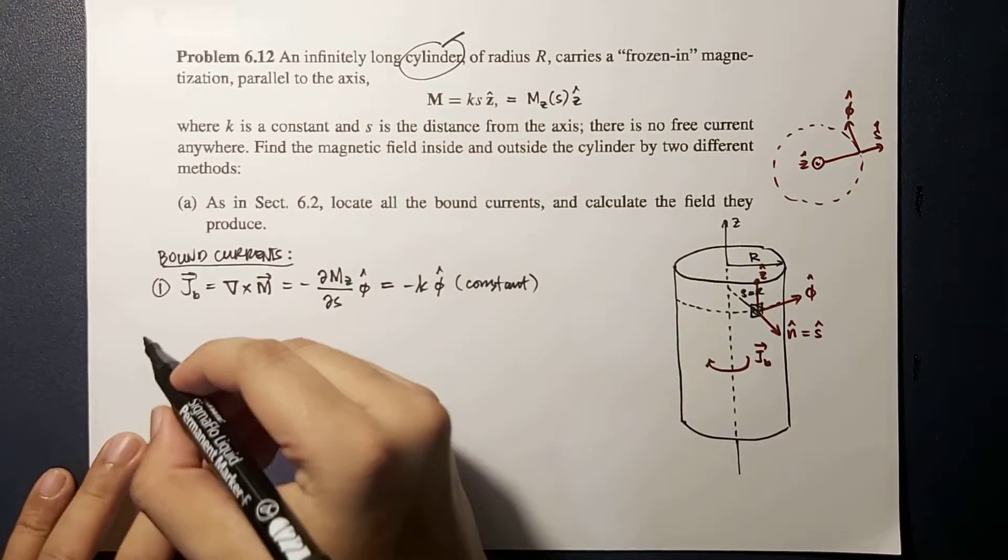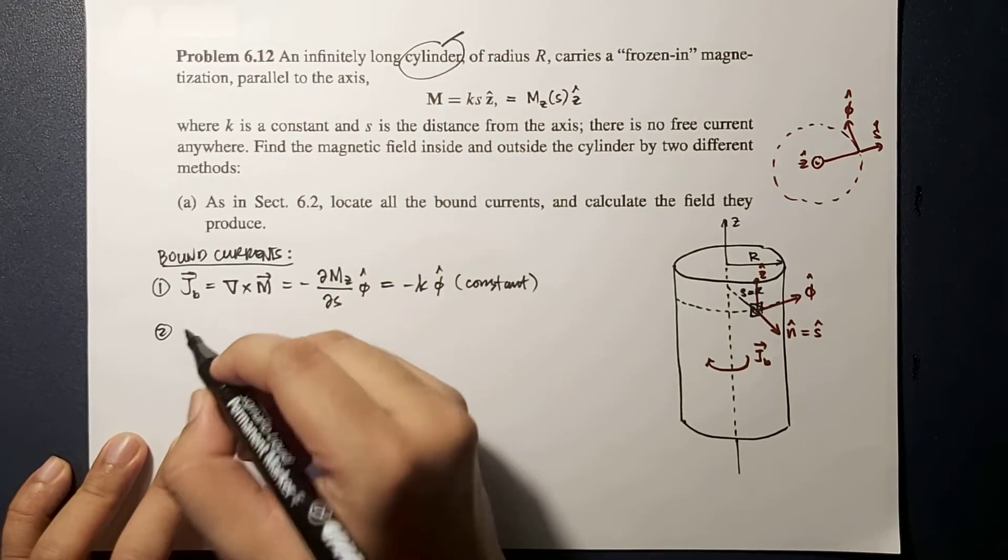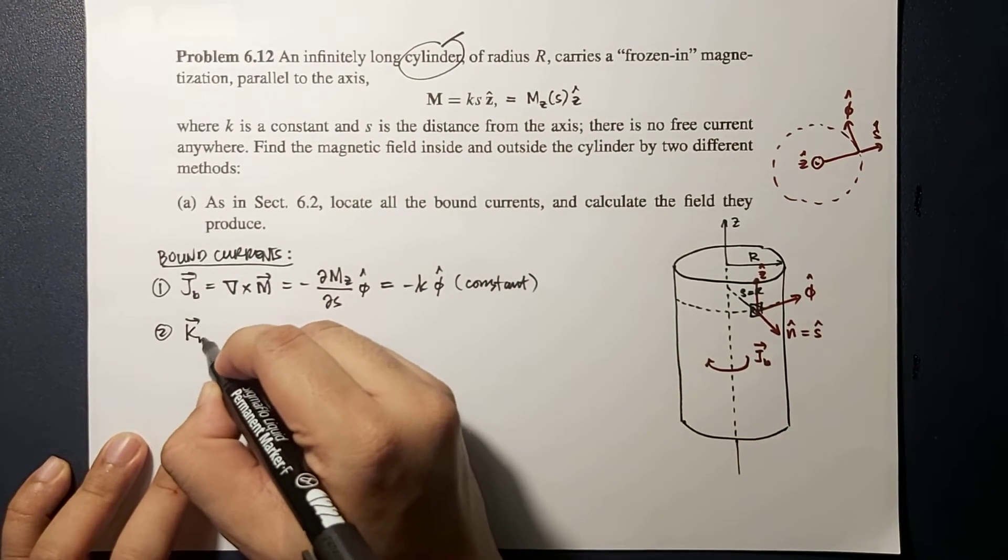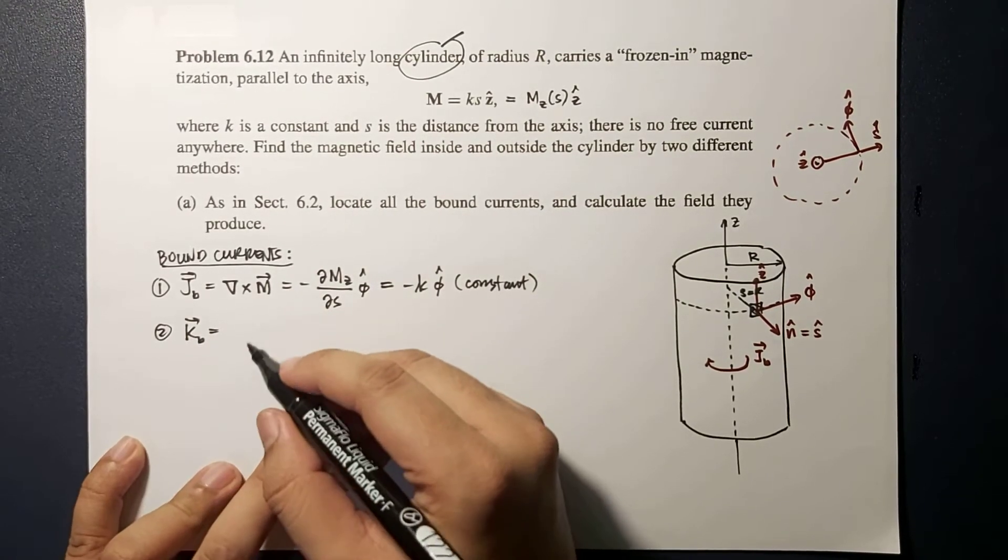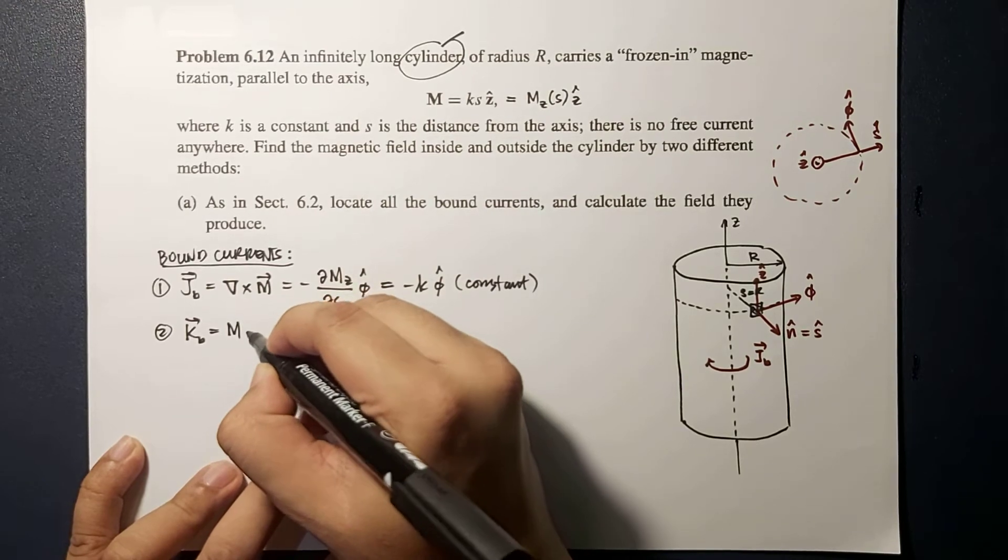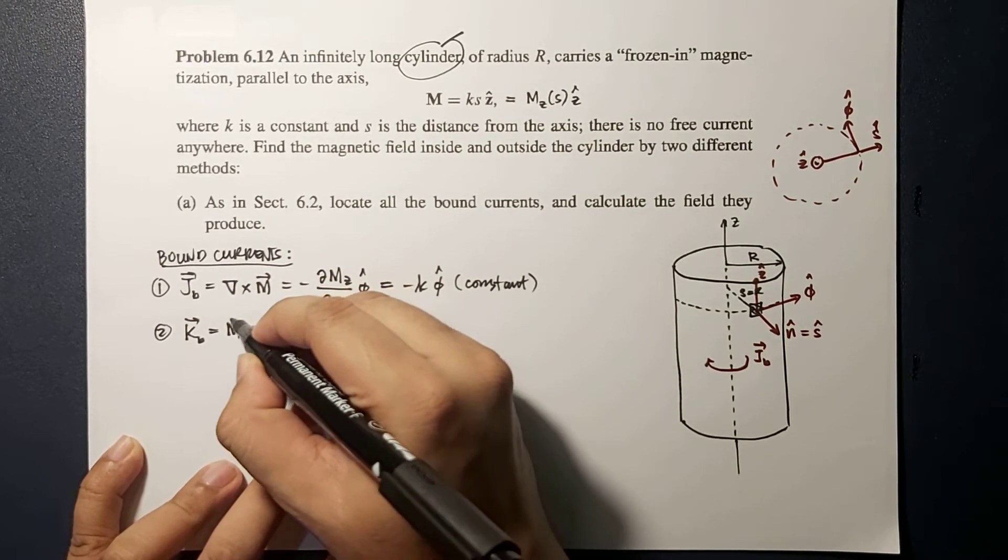Next, number two, we're looking for the surface current density, which is related to your magnetization by this expression M cross N hat.